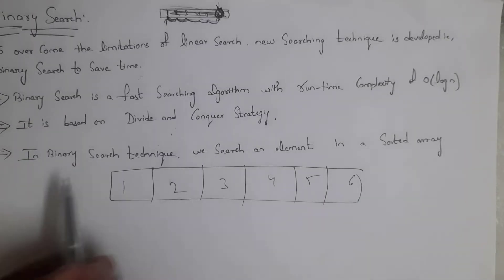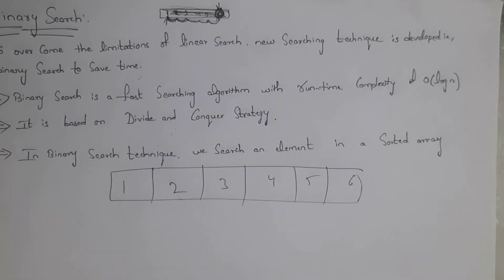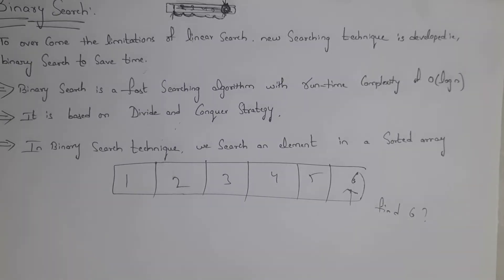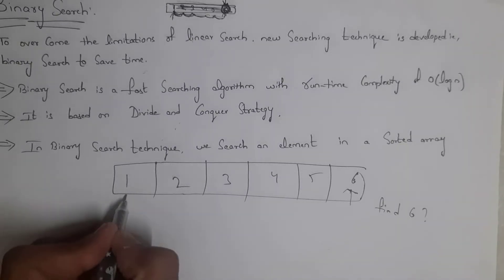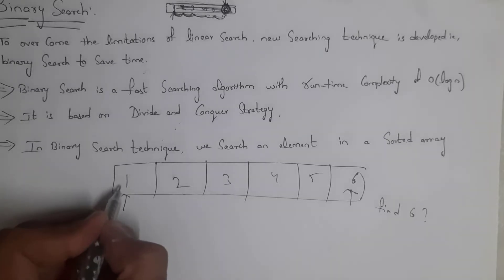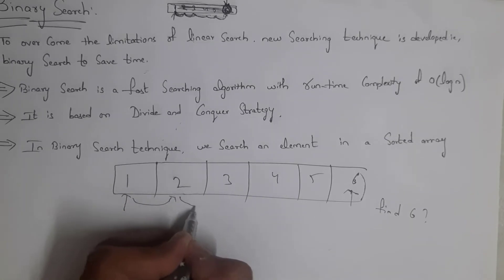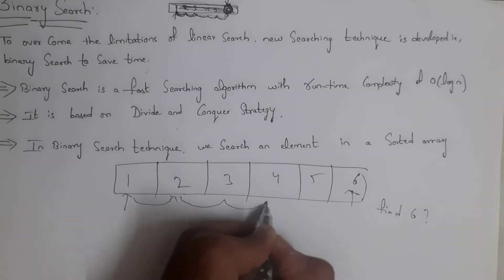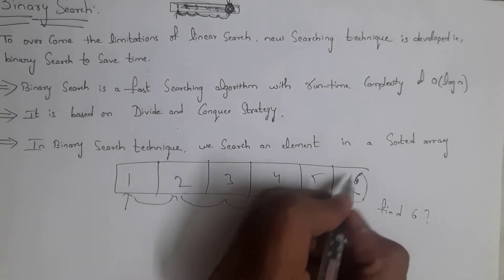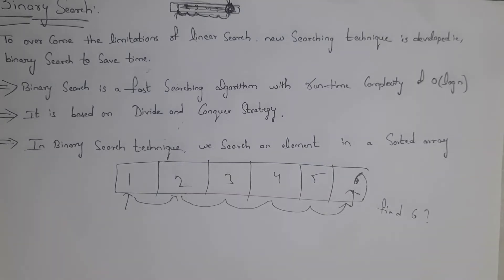For example, this is an array of elements containing total six elements. I want to find element six. So in linear search, it will search each and every element. First it goes to the first element — six is not present. Again it goes to second — six is not present. Again it goes to third, fourth, and at last it goes to sixth. Therefore, we got the sixth element. In linear search, it searches each and every element to find a particular element, so it is a time-taking process.